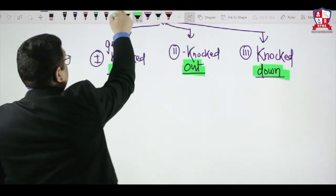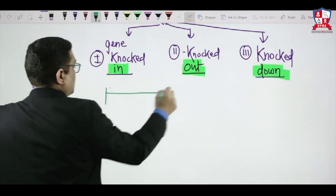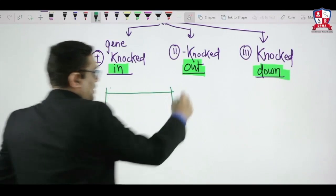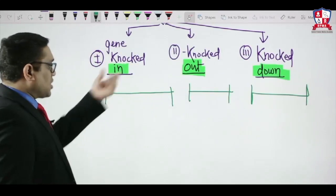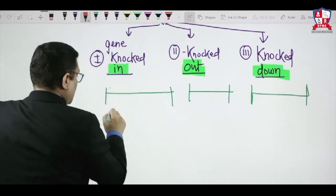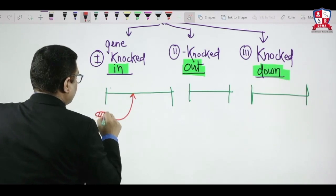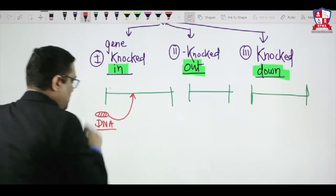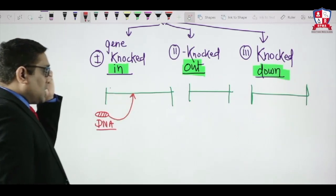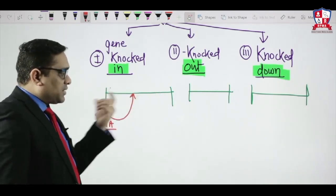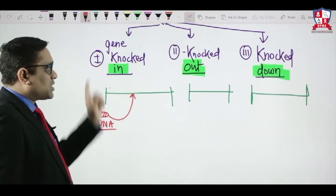In this, take an example of a segment of the gene. Suppose I am showing you this is the segment of the gene. For all of them, I am showing you segment of the gene. Knocked In means we are adding gene from outside. We are adding a segment of DNA. We are adding DNA into the native gene—that is called Knocked In.